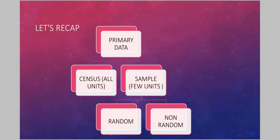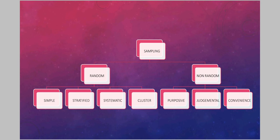To recapitulate: primary data can be collected for all units — census method — or for some units — sampling method. Sampling can be random or non-random. Random sampling is further divided into simple, stratified, systematic, and cluster sampling. Non-random sampling is divided into purposive, judgmental, or convenience sampling. Random sampling is based on some law, rule, or calculation, whereas non-random sampling is based on the value judgment of the investigator. Random sampling gives more reliable results, whereas non-random sampling gives biased results. However, both methods can be chosen depending on the situation. That's all for this topic. Thank you, and have a nice day.